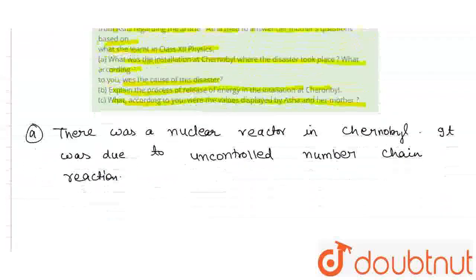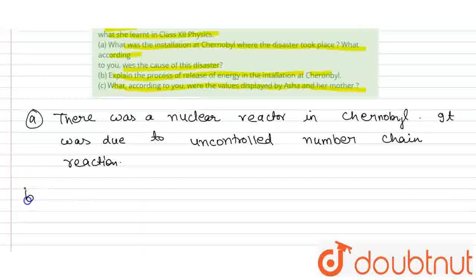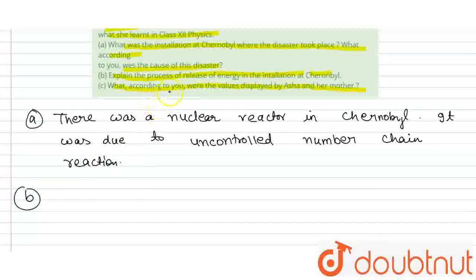Now, part B. Explain the process of release of energy in the installation at Chernobyl. So, the process is nuclear fission.